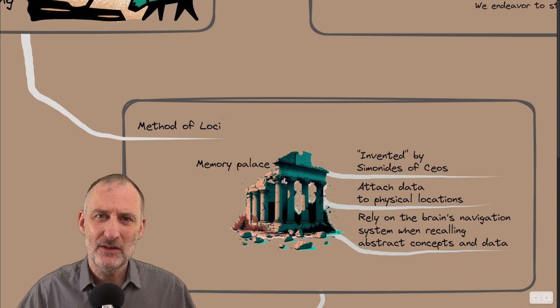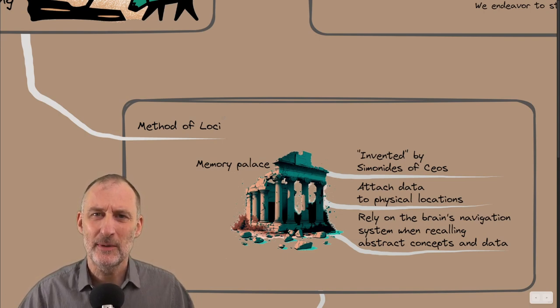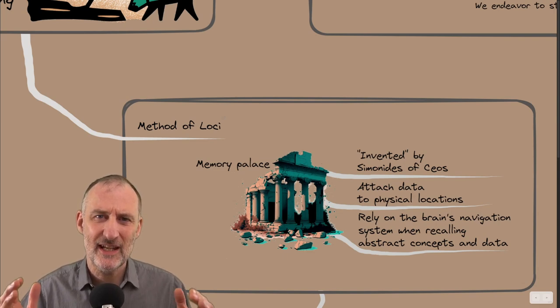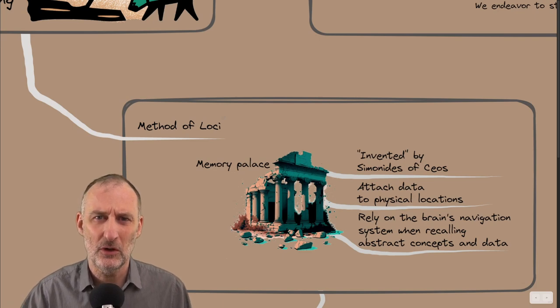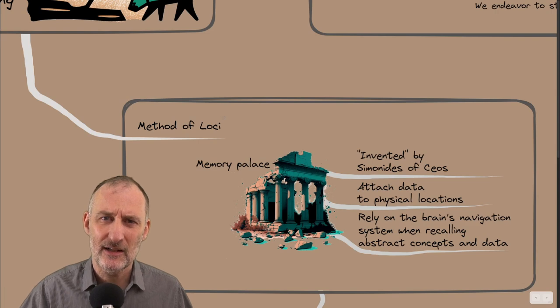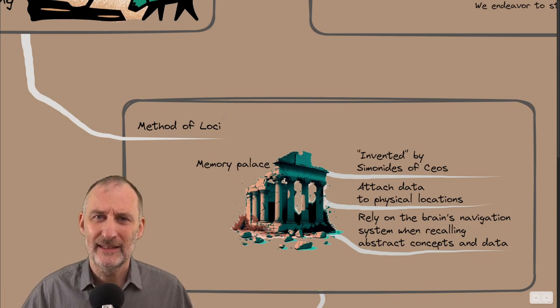Memory champions use the Method of Loci to remember a long sequence of cards or numbers. They imagine a place that they are very familiar with, maybe their school, their office, their home, and they imagine walking up the stairs, opening the door, meeting the doorman,